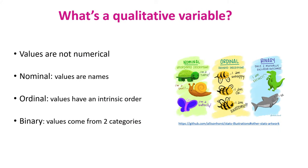What is a qualitative variable? Well, it is about quality and not quantity, so the values are not numerical. Qualitative data, also referred to as categorical data, come in three flavors: nominal, in which case they take a name like a genotype or species; ordinal, when the values have an intrinsic order, like three levels of happiness; and binary, when values come from two categories, like alive or dead.